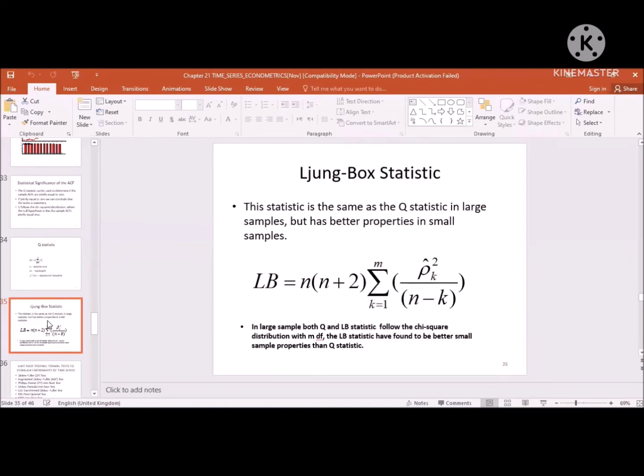The bracket contains the summation. When we have all the ρs, N into N plus 2 summation: ρ₁ squared plus ρ₂ squared plus ρ₃ squared, divided by N minus K, where K is the lag.